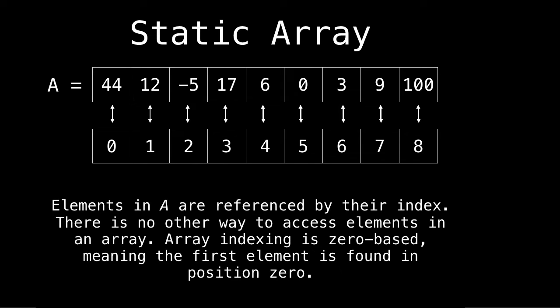Okay, so we have a static array A I've defined at the top. So A contains the values 44, 12, minus 5, 17, 6, 0, 3, 9, 100. Currently, all the elements are distinct, but this is not a requirement of an array.